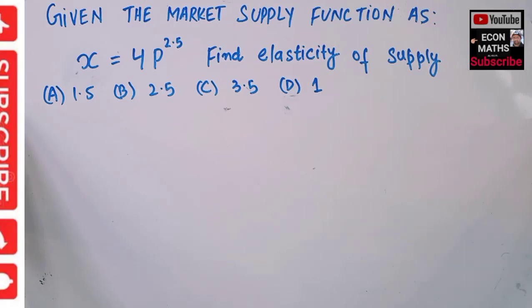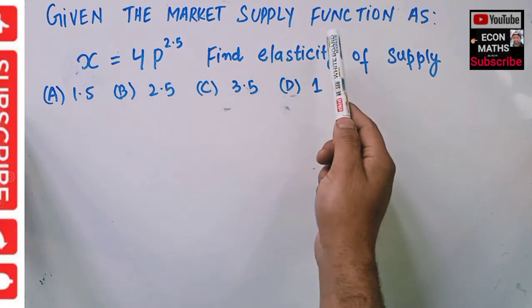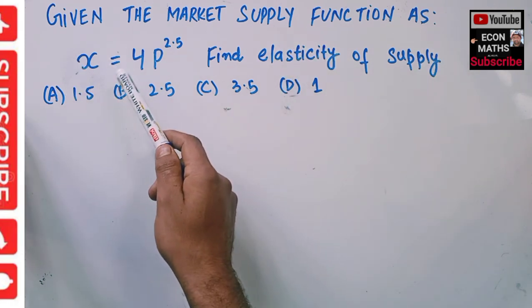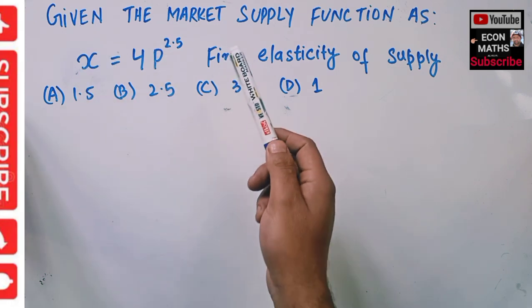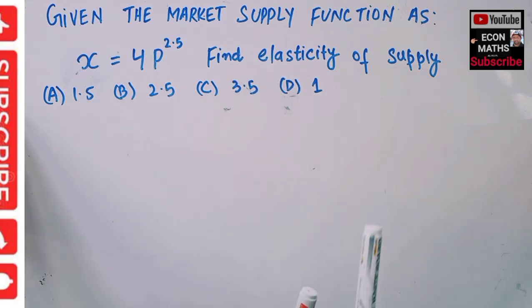In this video we will solve a question on price elasticity of supply. The question is: given the market supply function X = 4P^2.5, where X is the quantity and P is the price, we need to find out the elasticity of supply.